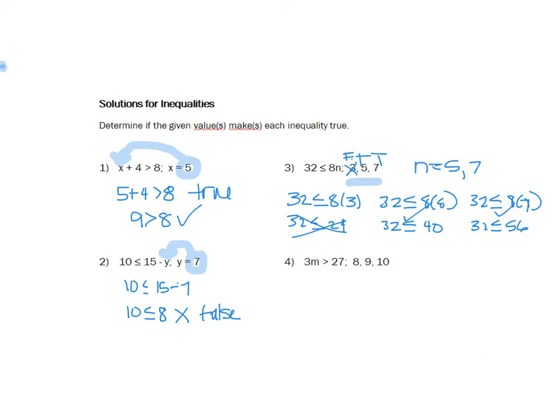Here this one says that 3 times m, 3m, remember that 3 is the coefficient. At this point, I don't know what m is, but I know I have 3 of them, is greater than 27. So here are the numbers they want me to substitute in. Here I have 3 times 8 is greater than 27. I know that 3 times 8 is 24, is greater than 27. Nope, that's false.